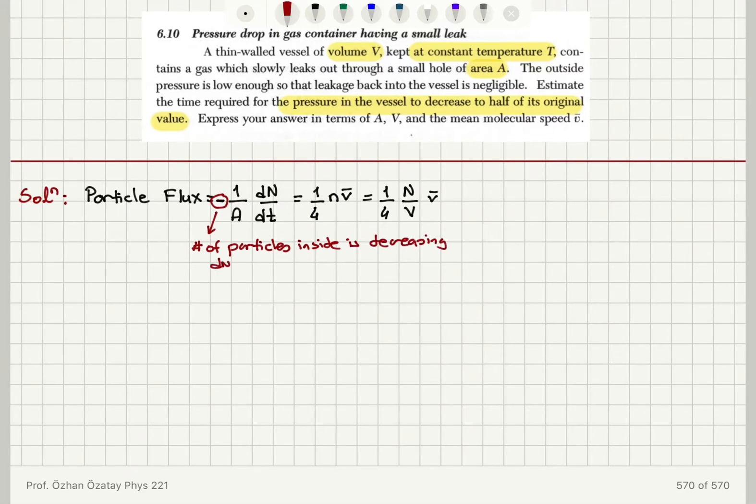Therefore, dN dt is negative, and I have defined particle flux as a positive quantity. It's therefore 1/4, N over V, V-bar, which is minus 1 over A, dN dt.